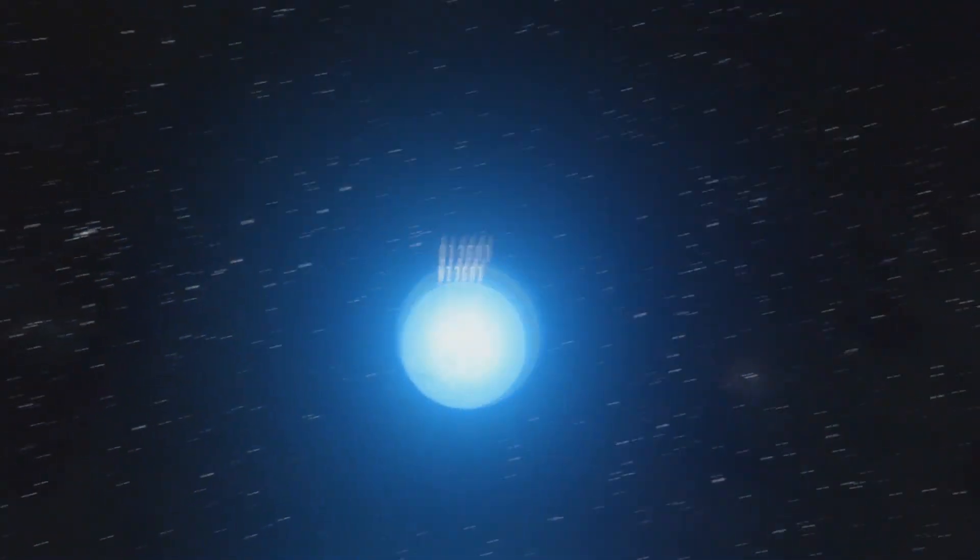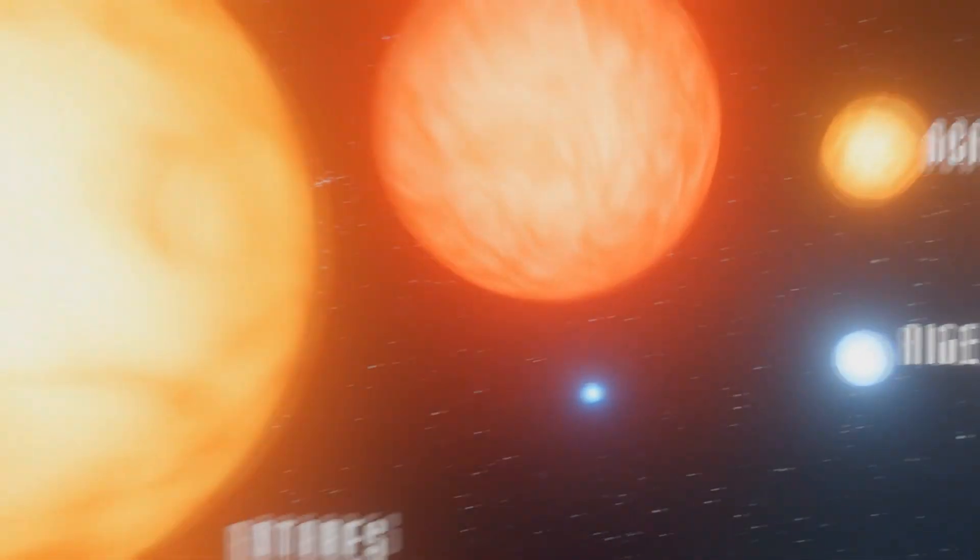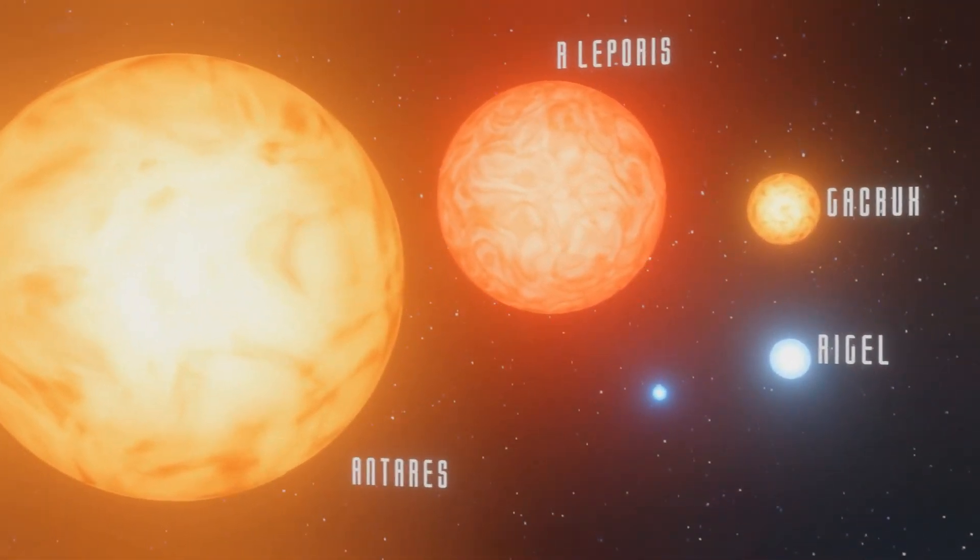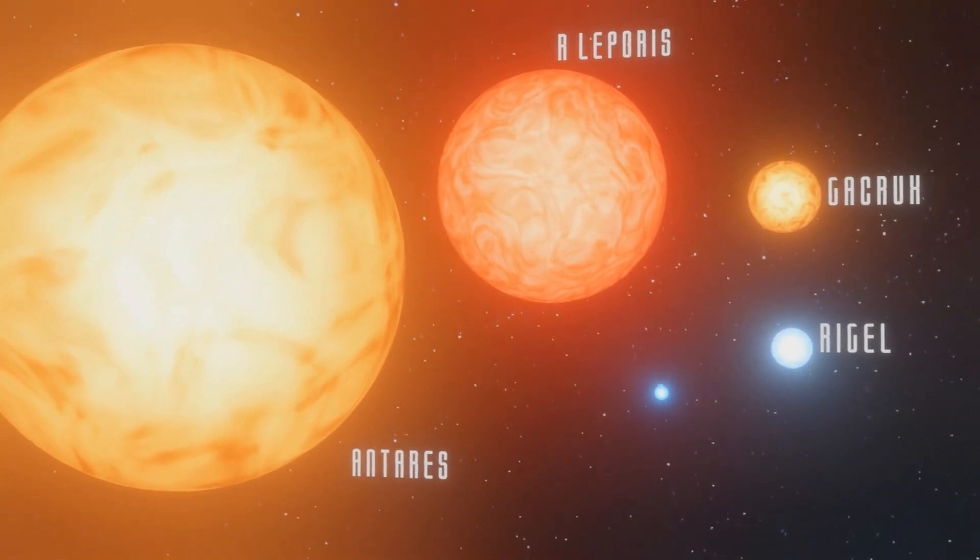There are stars in the night sky that are of truly frightening proportions. These are Rigel, Gacrux, Aldebaran, and the mighty Antares, which has a volume several hundred million times that of our Sun.